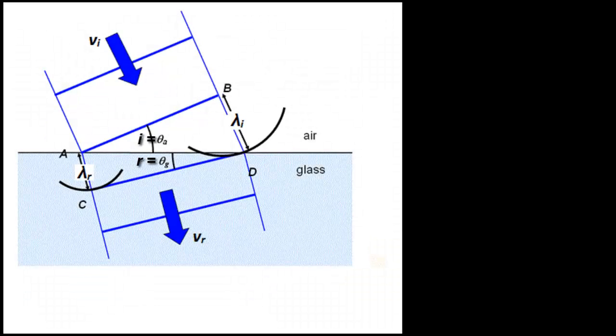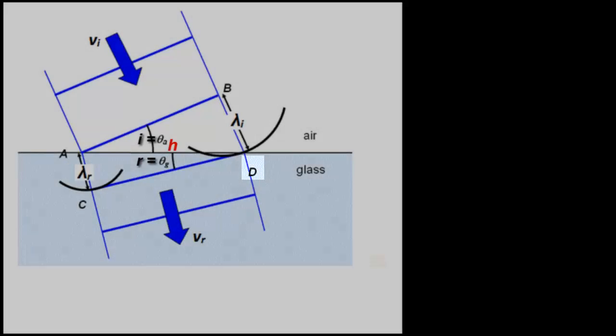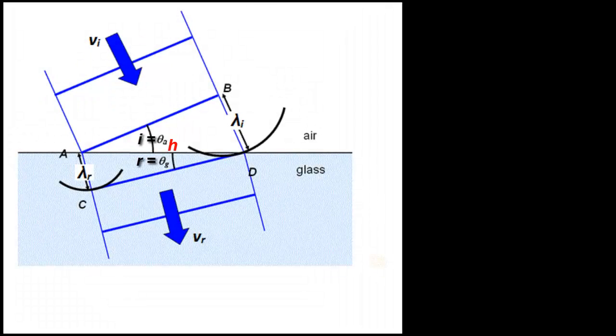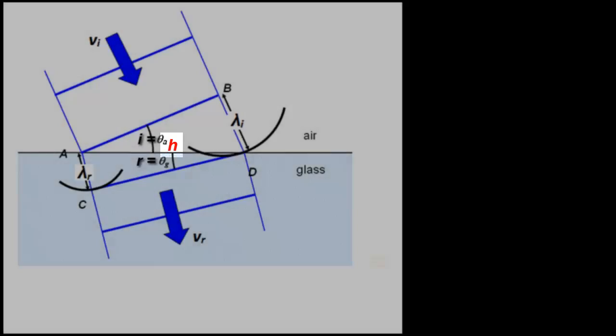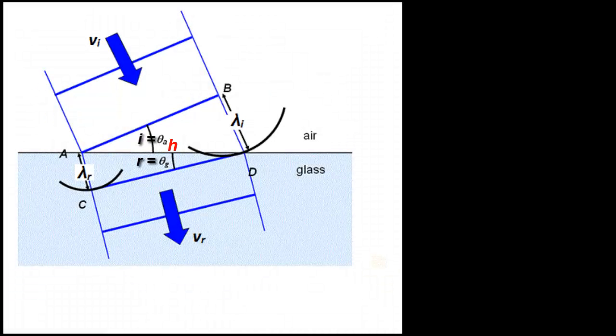Triangle A, B, D, A, and one on the glass side, triangle D, C, A, D. They both share the common hypotenuse, which is labeled with that red H.